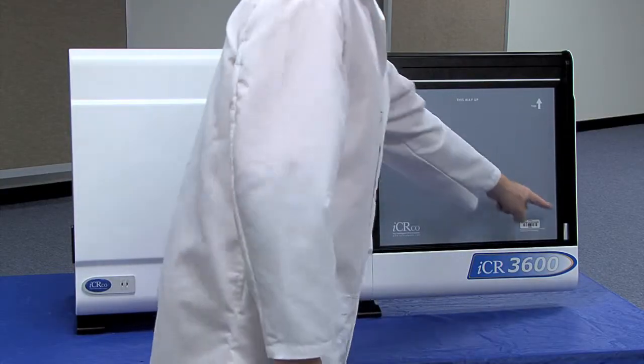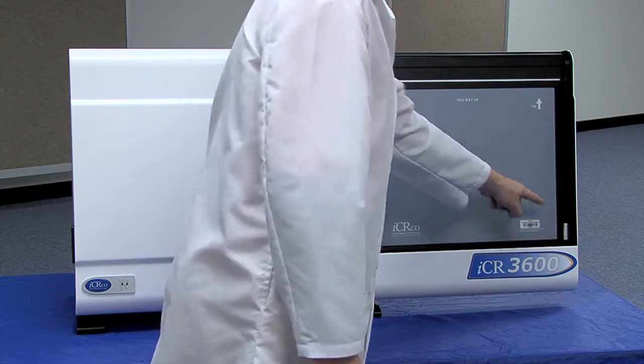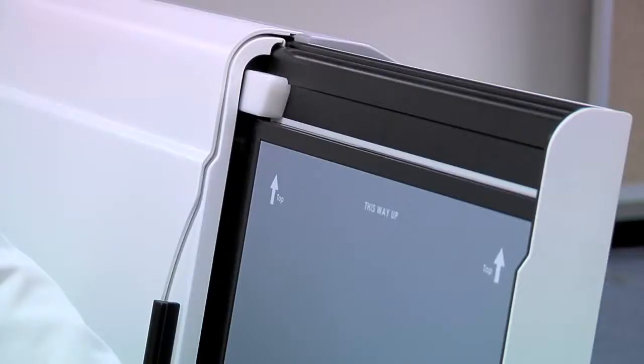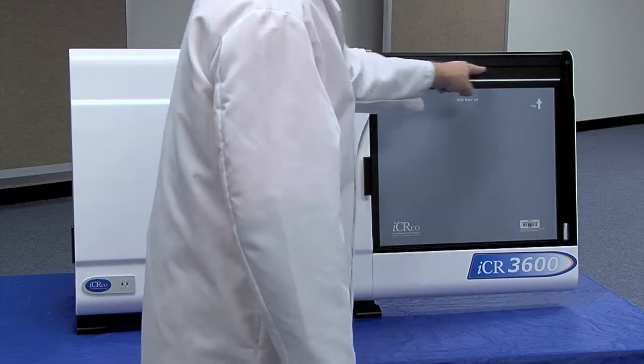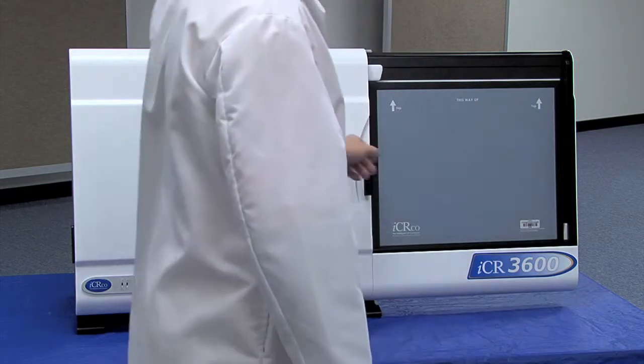Visually inspect the cassette. Note the two loading blocks located on the top left and bottom right of the bezel. If loaded correctly, the cassette will be resting underneath the loading blocks and the 14x17 guidelines will be completely visible.